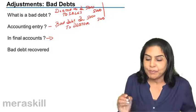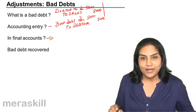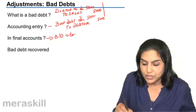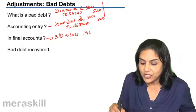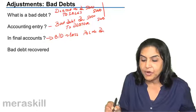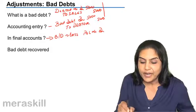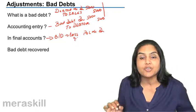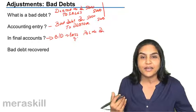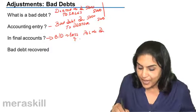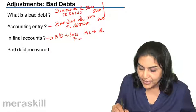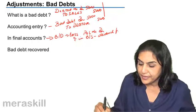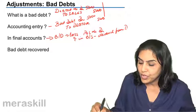Our entry is supposed to be bad debt account debit to debtor. Bad debt is a loss, so what is the entry? Profit and loss account is debited. Since bad debt is a loss, profit and loss account is debited and debtor account is to be credited. Crediting the debtor account means reducing the balance from debtors, and therefore in the balance sheet, we deduct the amount from debtors.